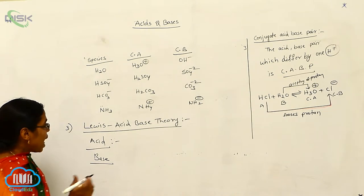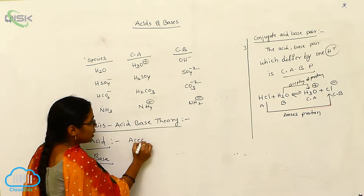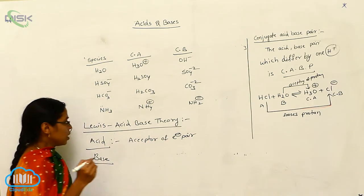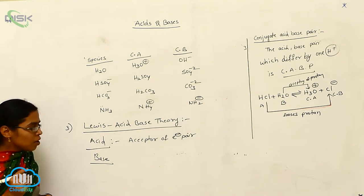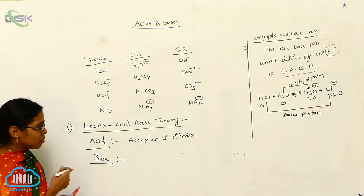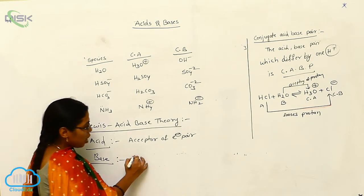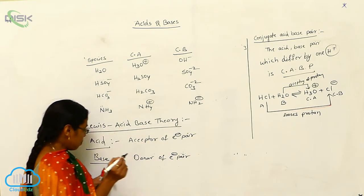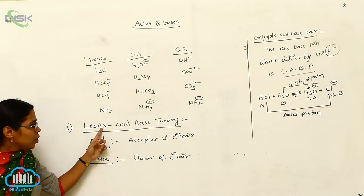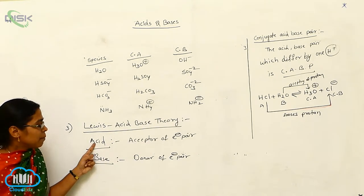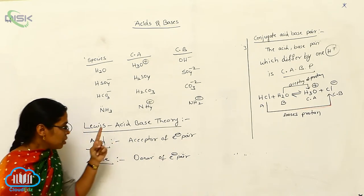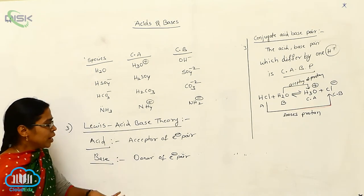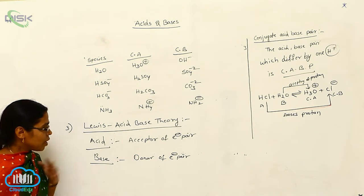Lewis acid is the acceptor of an electron pair — that is called Lewis acid. Lewis base is the donor of an electron pair — that is called Lewis base. So Lewis acid is the group which can accept the electron pair, and Lewis base is the group which can donate the electron pair.